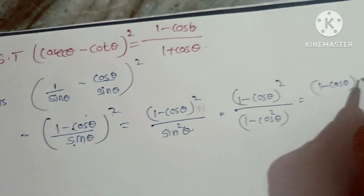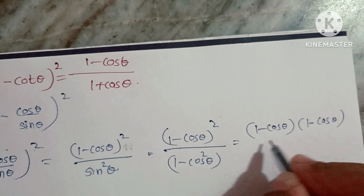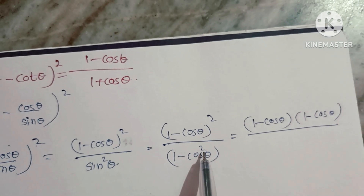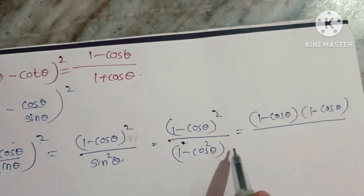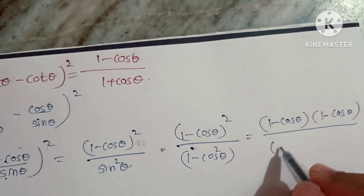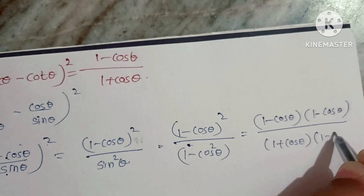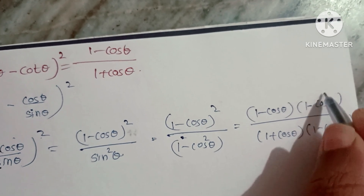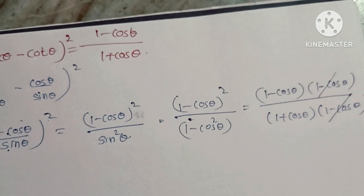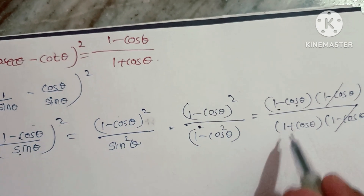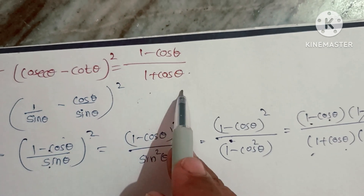So (1 - cosθ)² / sin²θ = (1 - cosθ)² / [(1 - cosθ)(1 + cosθ)]. The (1 - cosθ) factor cancels, leaving (1 - cosθ)/(1 + cosθ). Hence proved.